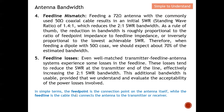In simple terms: the feed point is the connection point on the antenna itself — for example, a BNC connector or SMA connector port that feeds the antenna. The feed line is the cable that connects the antenna to the transmitter or receiver, for example a coaxial cable. So the coaxial cable is what we call the feed line.